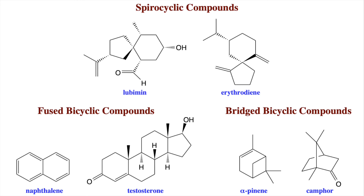For fused bicyclic compounds, the first example is naphthalene, which is not naturally occurring but is naturally derived. Naphthalene is what mothballs are made from — it comes from coal tar, basically cooking coal and extracting the sludge at the bottom, which is mostly naphthalene. Then we have a steroid: testosterone. You can see it has multiple fused ring systems. In fact, all steroids — testosterone, estrogen, cholesterol — all have multiple fused rings like that.